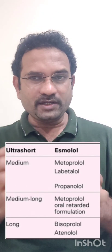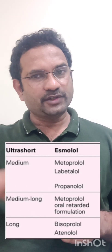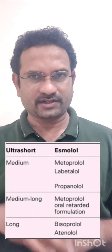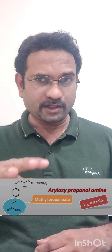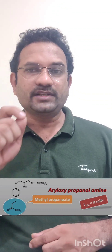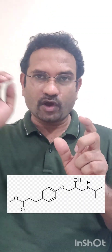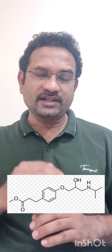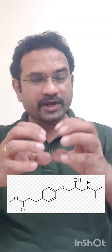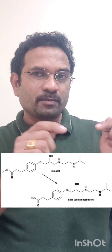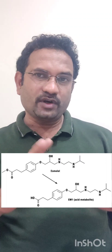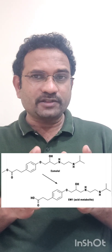You need to understand why esmolol is ultra-short acting — the answer goes back to structure. Esmolol is a beta blocker containing a methylpropanoate group; it is an ester derivative. The 'ES' in esmolol stands for ester, and 'OL' is common to all beta blockers. When an ester is present in the structure, the body's esterases break it down. The moment the ester is broken, it gives an acid derivative that has no beta-blocking capability, so it will not act as a drug. That is why esmolol acts only for 10 minutes.